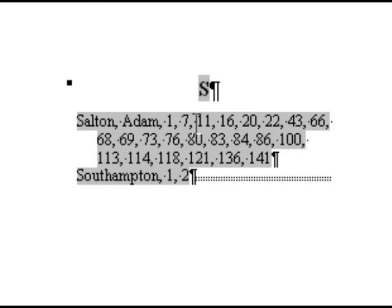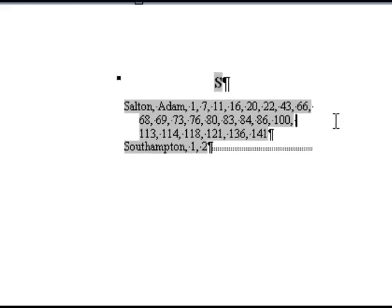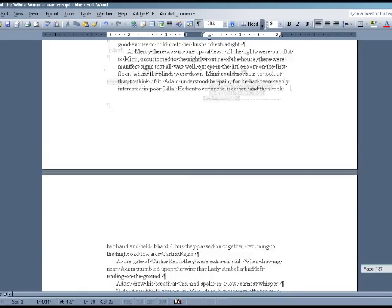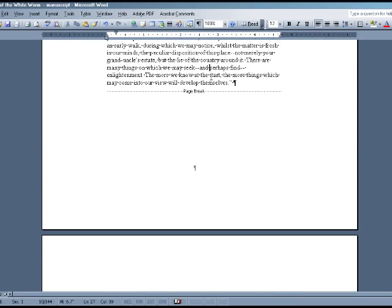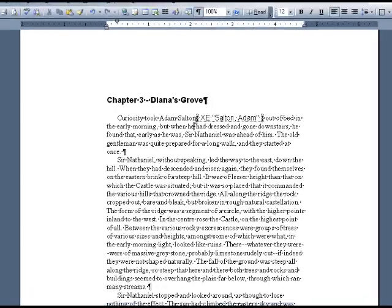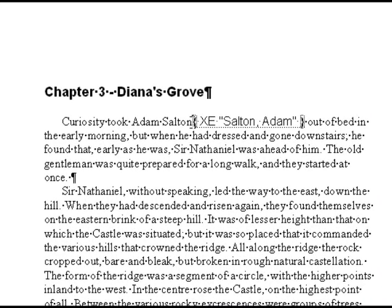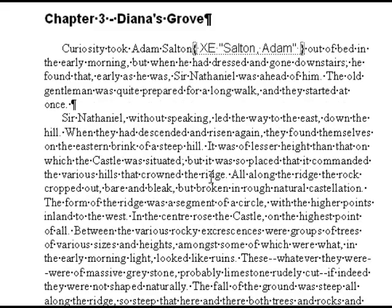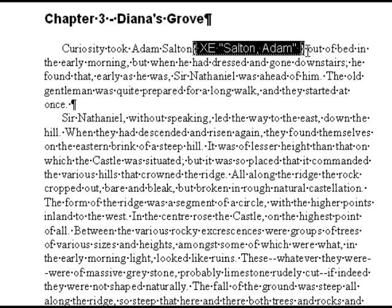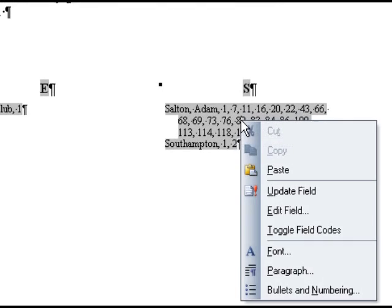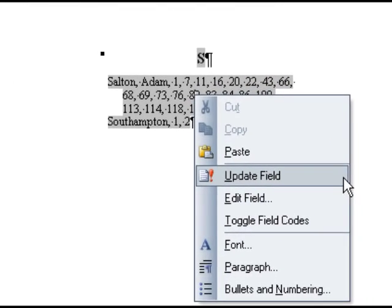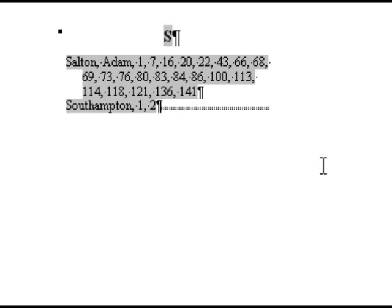Let's pretend one of the Adam Salton entries, the one on page 11, needs to be removed. Rather than deleting the entry in the index itself, go to page 11 of your manuscript and make sure you are in Show Formatting mode so you can see the index script tags. Find the script tag you want to remove and delete it. Then go back to your index at the end of the manuscript, right-click on the index, and select Update Field. You'll notice that the entry on page 11 has been removed.